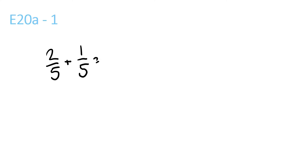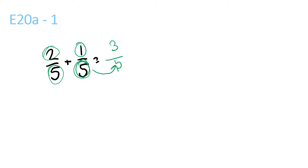The bottom numbers are both the same, so all you have to do is add the top two. So 2 plus 1 is 3, then you just move the bottom one over: 3 over 5.